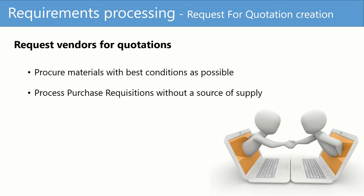A request for quotation invites the vendor to submit a quotation indicating prices and terms and conditions. It contains details about goods and services that they can procure, which quantity, the expected delivery date and the date on which the bid must be made. Quotations are the replies from vendors on request for quotations that have been sent to them.